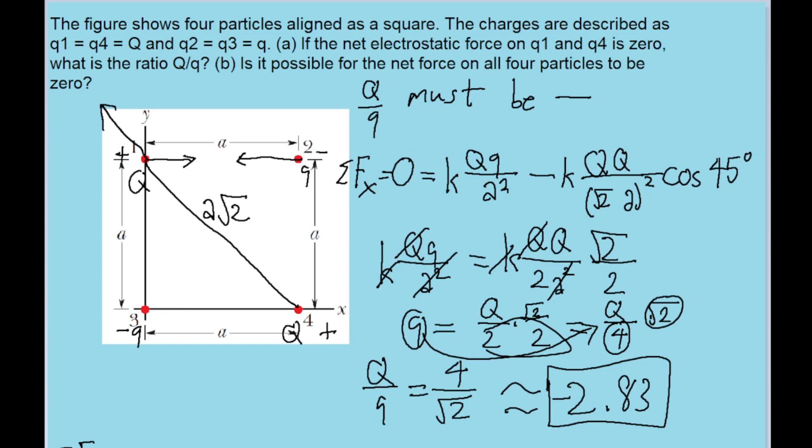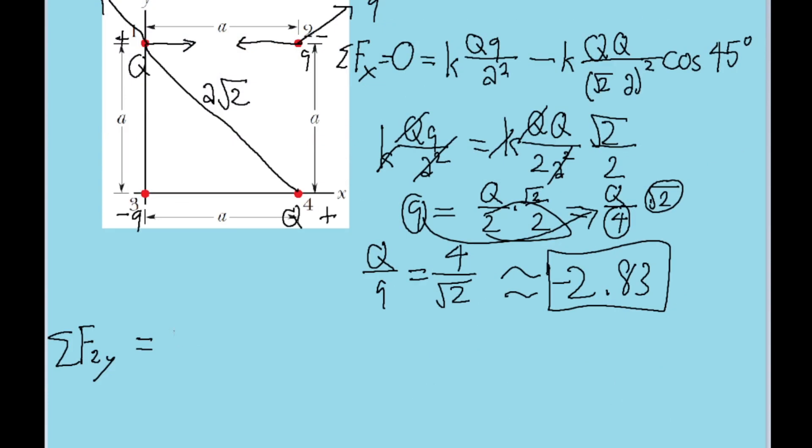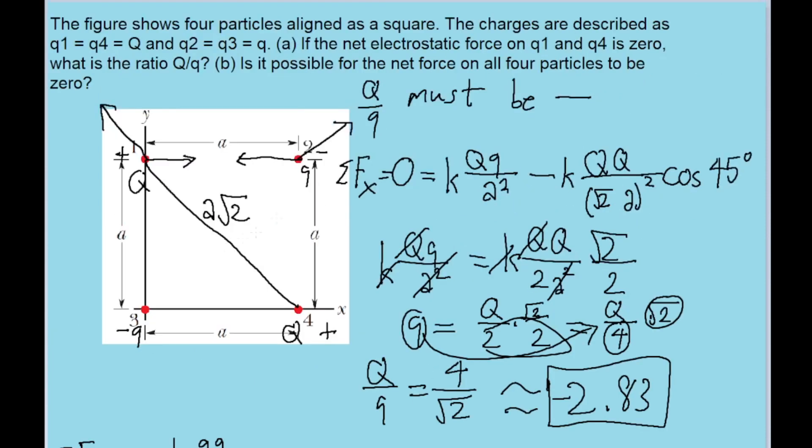Charge three is negative, so because they're like, it's going to feel a repulsive force towards the top right of the page. And the Y component of this is going to be K times the two small Q's divided by that diagonal distance, which is still going to be the square root of two times A, not squared. And now that we're looking, and again, diagonal force, so we're going to have to use one of the trig functions. And since we're looking at the Y component this time, we'll be using the sine of 45 degrees instead of the cosine. So that's that term from charge three.